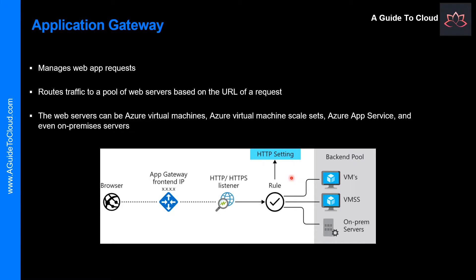The pool of web servers can be Azure Virtual Machines, Azure Virtual Machine Scale Sets, Azure App Service, and even on-premises servers. The Application Gateway will automatically load balance requests sent to the servers in each backend pool using a round-robin mechanism.